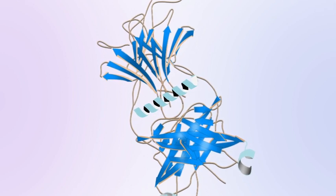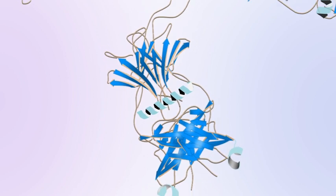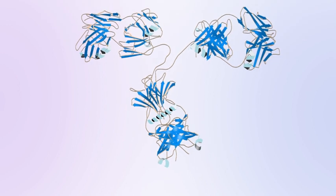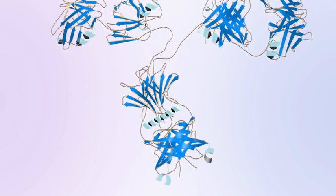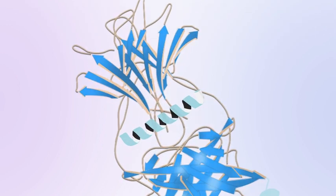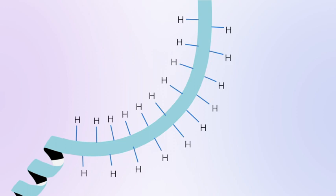Consequently, the 3D structure is critical to how the molecule interacts with other proteins, receptors or antigens. We can study the 3D or higher order structure of a protein using hydrogen-deuterium exchange HDX mass spectrometry.